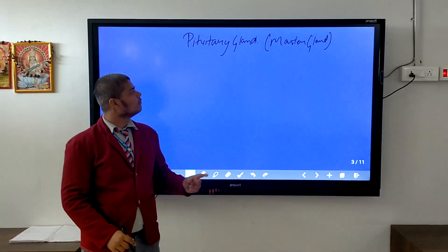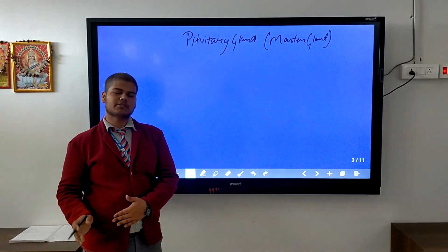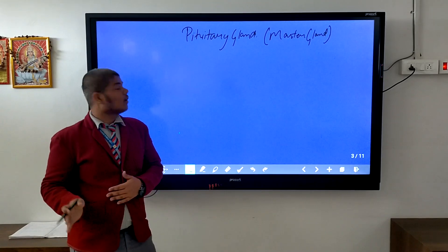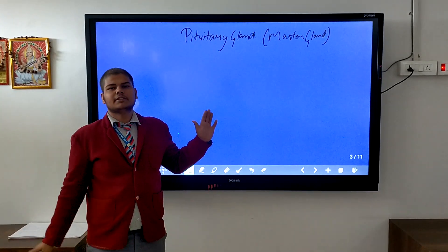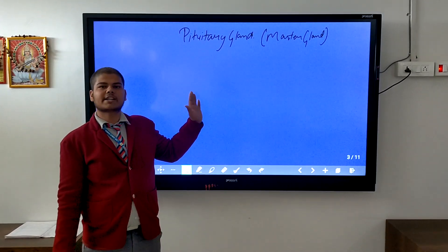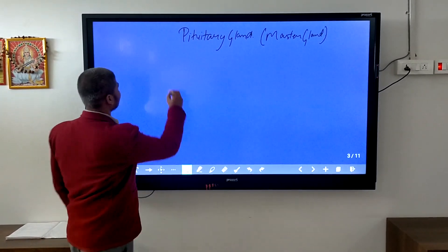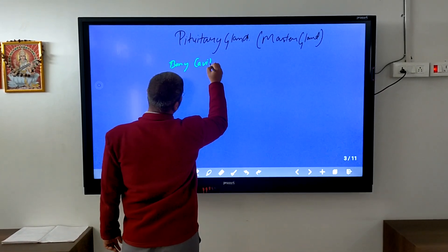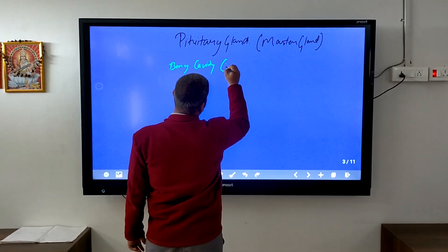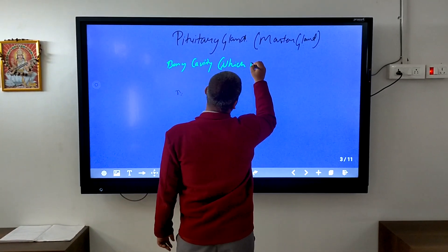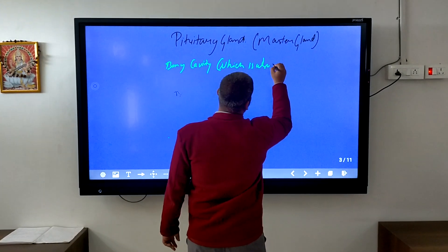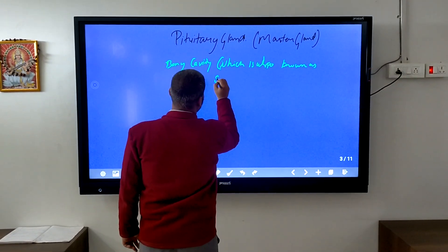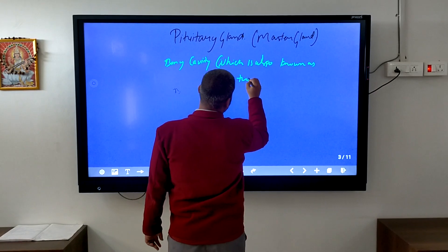The pituitary gland regulates the hormones of the body and its location within the body cavity, which is called the coelom. This body cavity is also known as the coelomic cavity.